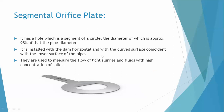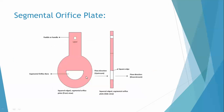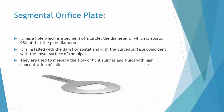The segmental orifice plate is installed with the dam horizontal and with the curved surface coincident with the lower surface of the pipe. The curved part of the hole aligns with the lower surface of the pipe. Segmental orifice plates are used to measure the flow of light slurries and fluids with high concentration of solids.